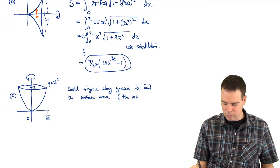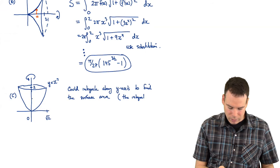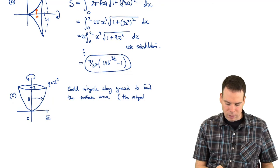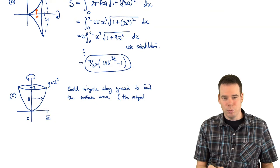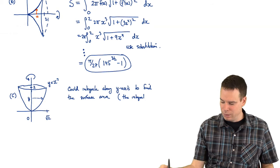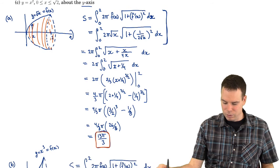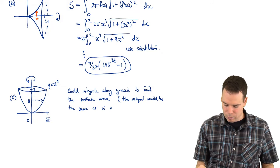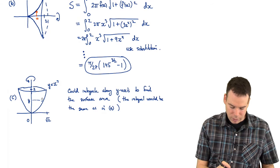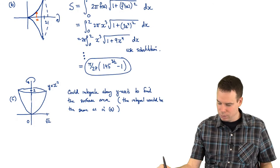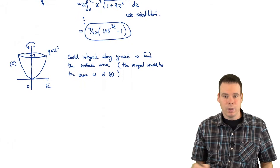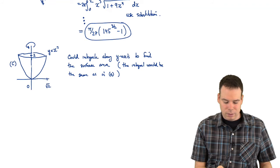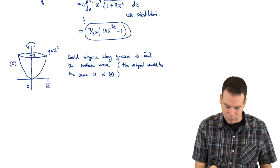If we integrate along the y-axis, the radius at a given y value is the square root of y. So we'd be integrating 2π times the square root of y times the arc length differential — which is exactly what we had in part A, where it was the integral of 2π times the square root of x times the arc length differential. So the same integral arrives, meaning we're essentially already done. The answer is 13π/3. However, I'll also do it along the x-axis to show how rotating around the y-axis but integrating along x fits together.